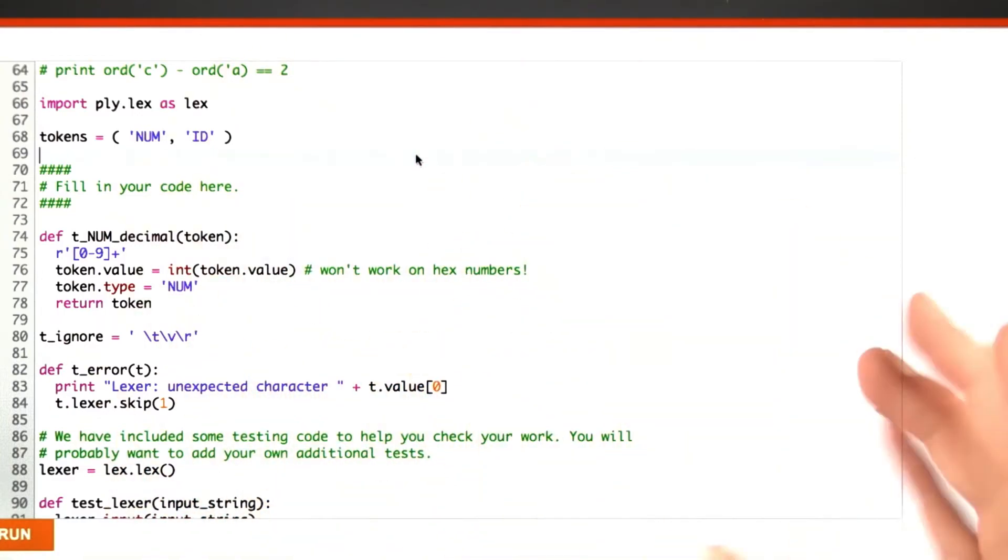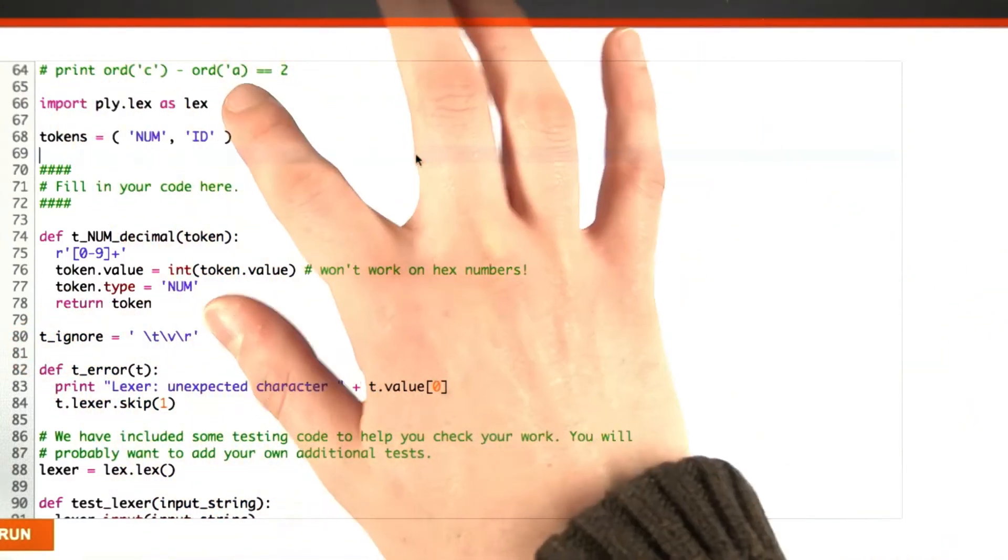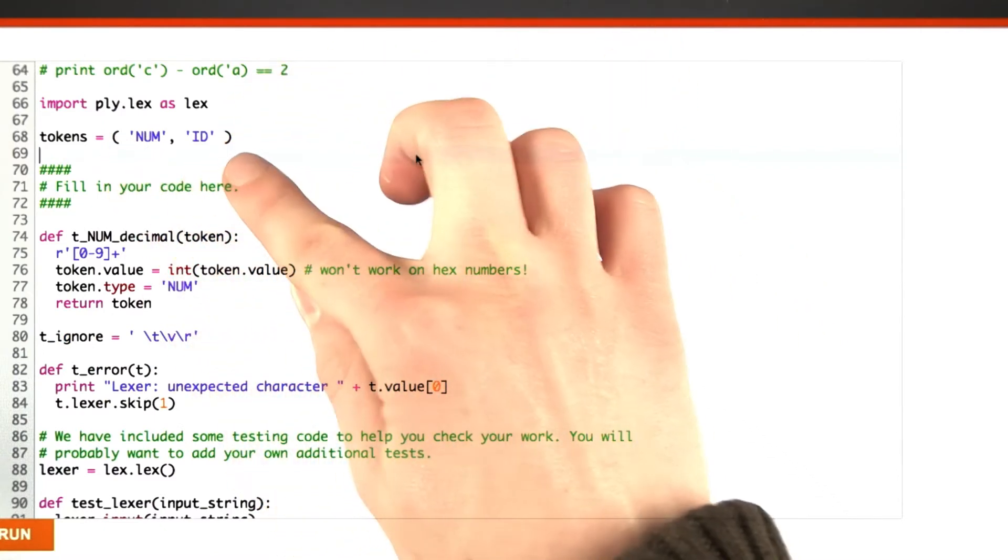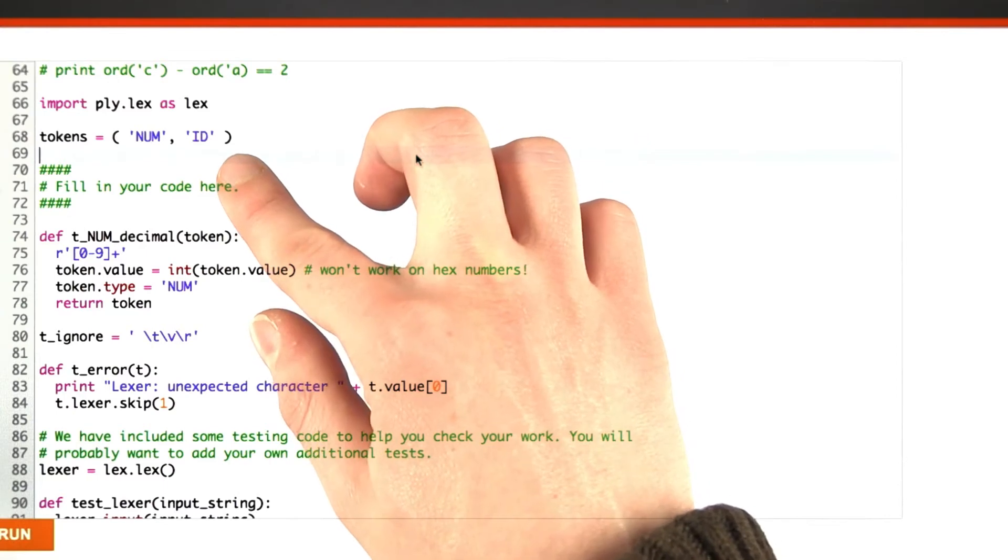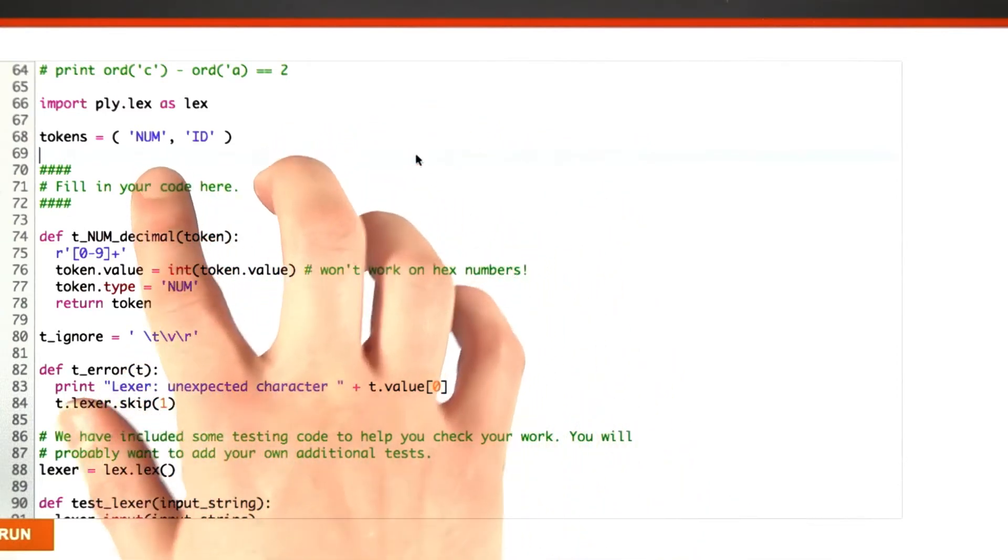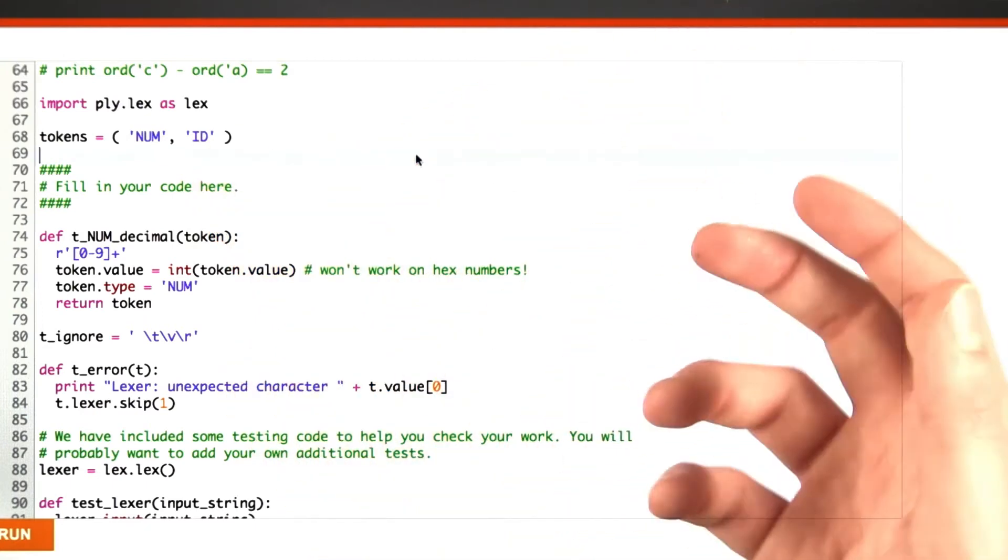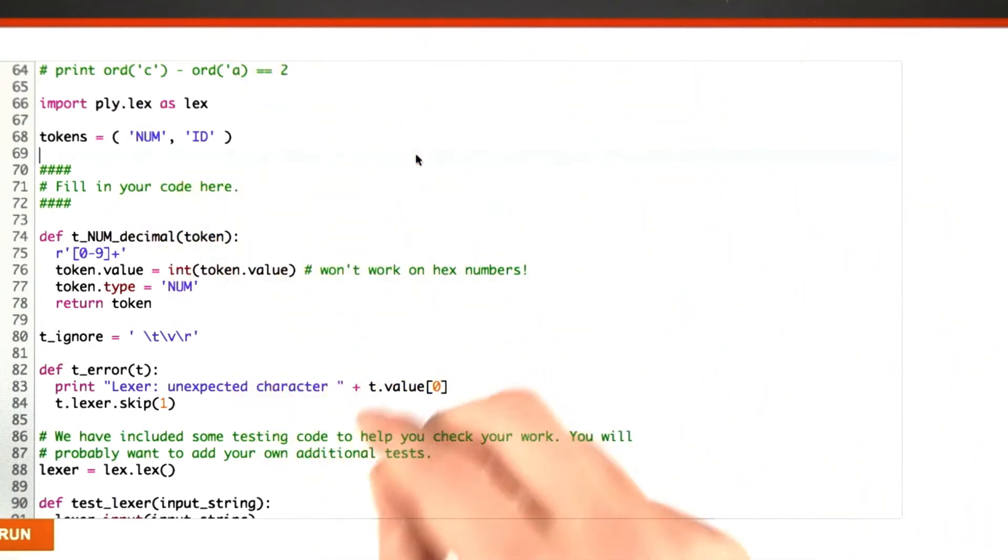So here, I have the given code for this problem. Let's quickly run through it. Right here, we have importing the lexer. Then we name the tokens that we want to have. NUM stands for the hexadecimal numbers that we're going to identify, and IDE is pretty much everything else, but the definition is described in the problem.